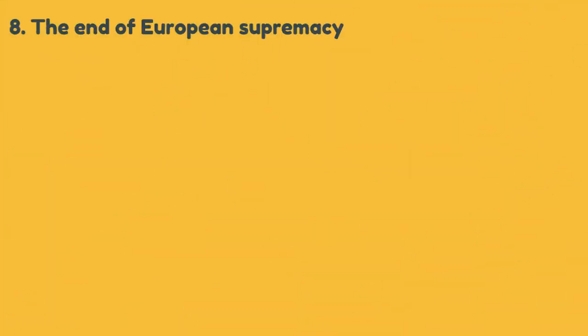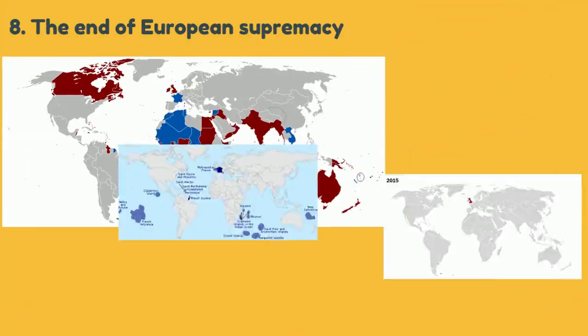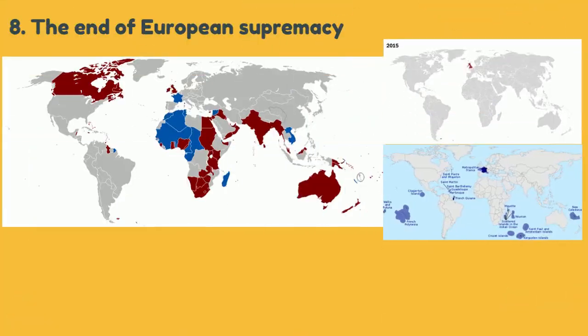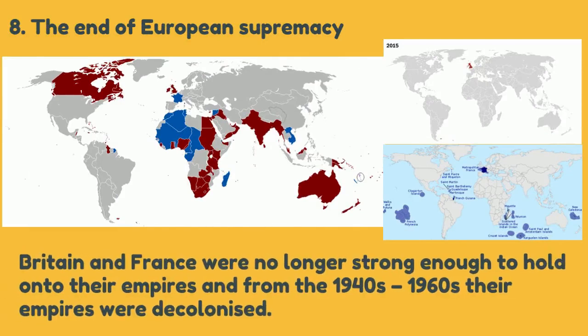World War II meant an end to European supremacy. Britain and France were no longer strong enough to hold on to their empires, and between the 1940s and 1960s, their empires were decolonised.